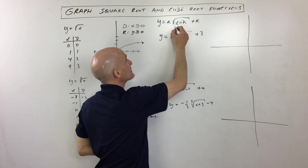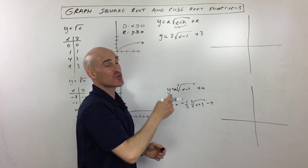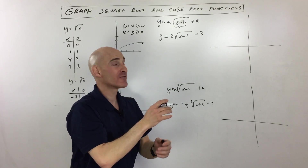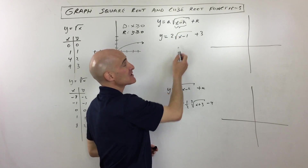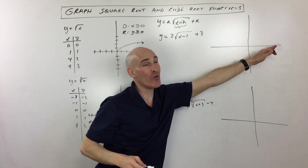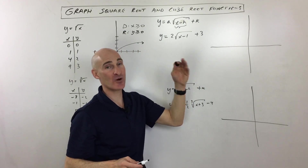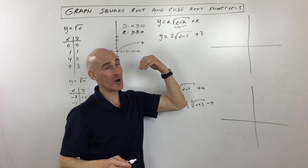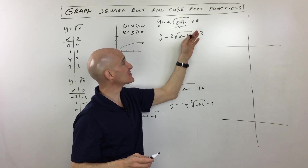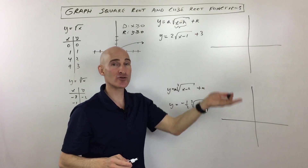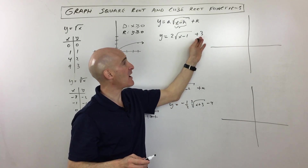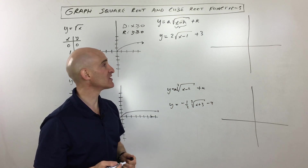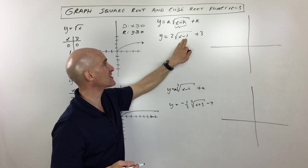The h is affecting the x direction — it's easier to remember because it's grouped with the x — but the thing to remember is it has the opposite effect. So if I have x minus one, that's actually shifting it to the right one. You would think minus one means left one, but it actually goes right one. If it were plus one, then it would go left one. The k value on the outside of the square root affects the vertical translation. If it's positive three, it shifts up three; if it's negative three, it shifts down three. So k has the same effect, while h has the opposite.